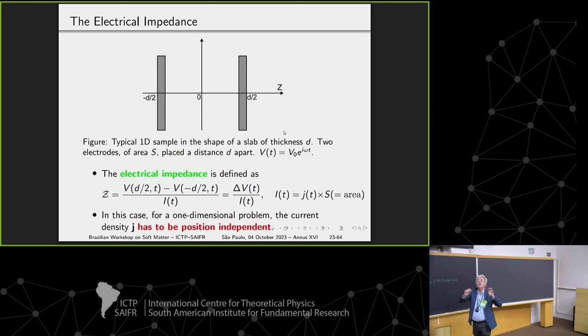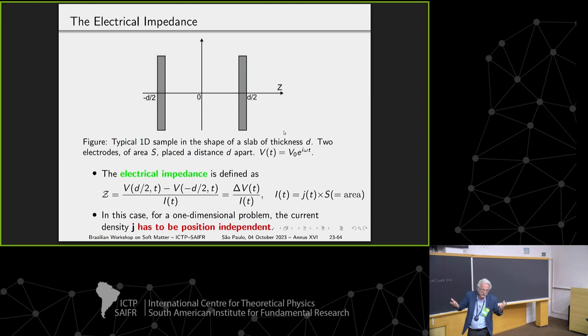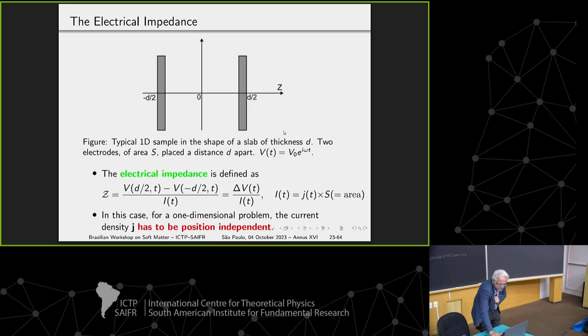The current inside the sample has to be the current in the external circuit. This is a point completely neglected in the last 40 years in impedance problems. No one talks about it, no one who uses PNP model. But anyway, we have fixed this problem; we imposed this.